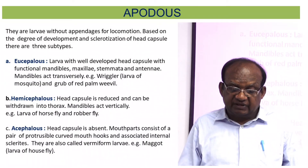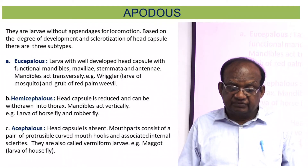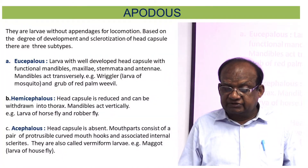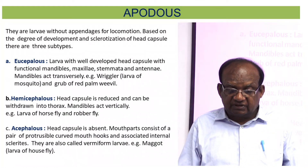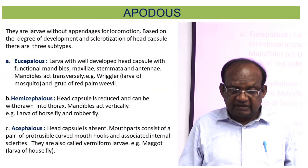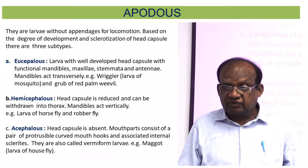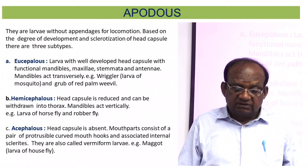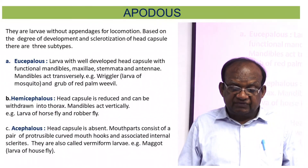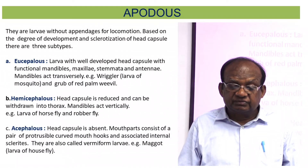The second type is hemicephalous. 'Hemi' means half. The head capsule is reduced and can be withdrawn into the thorax. Mandibles act vertically. Examples are larvae of horse fly and owl fly.